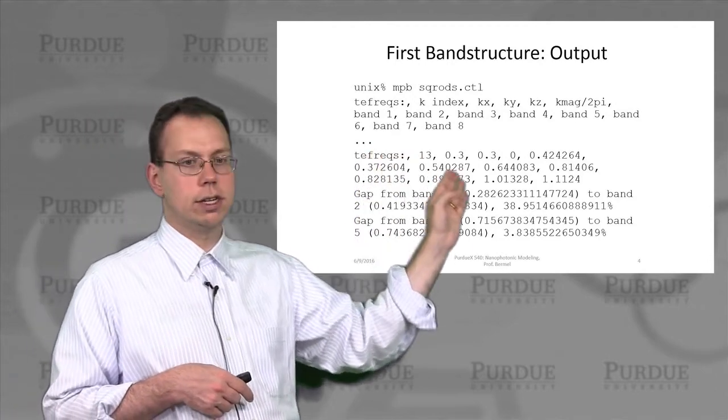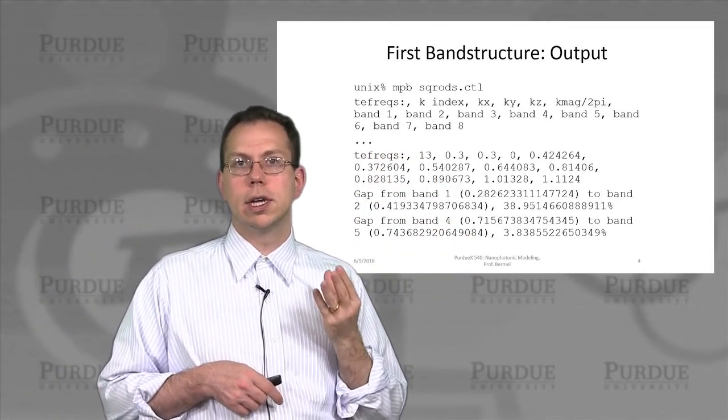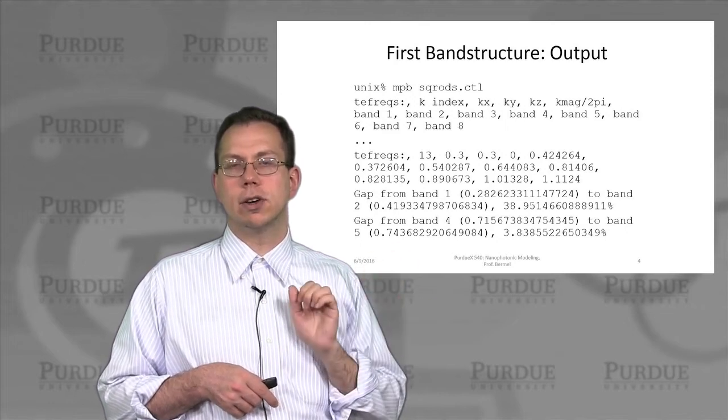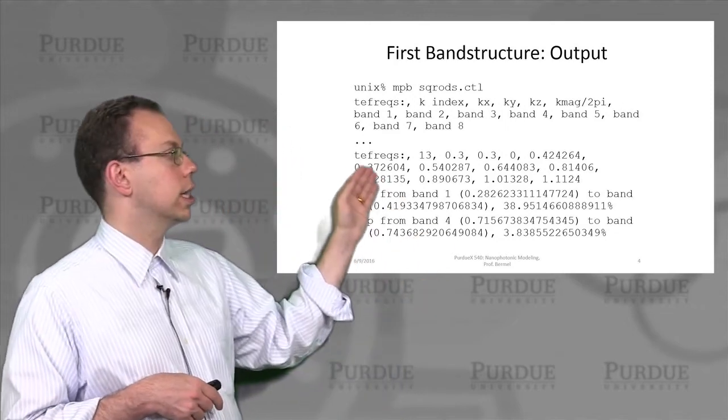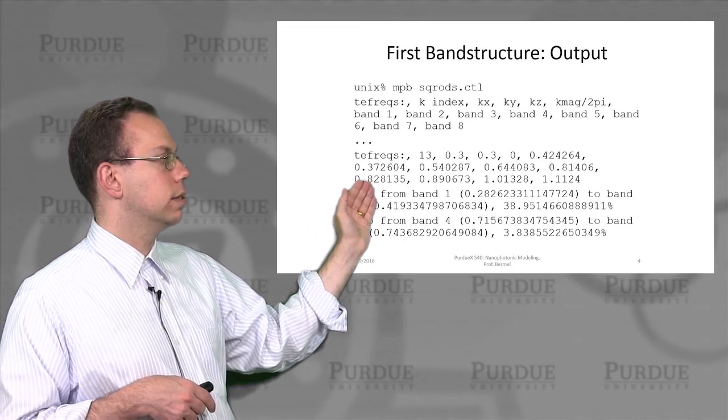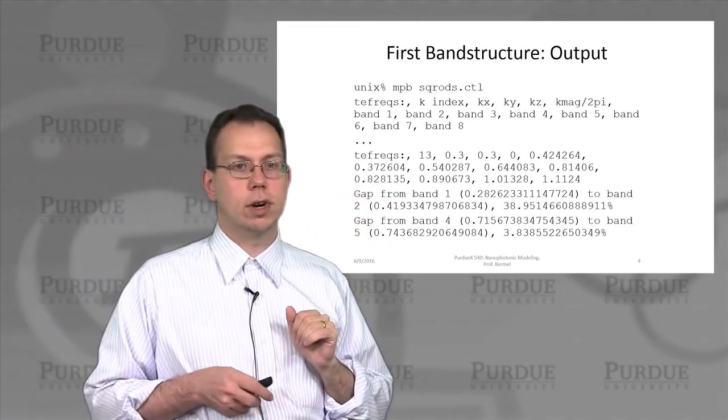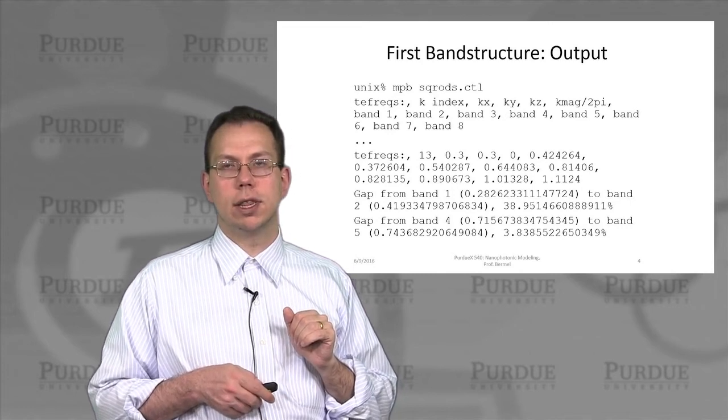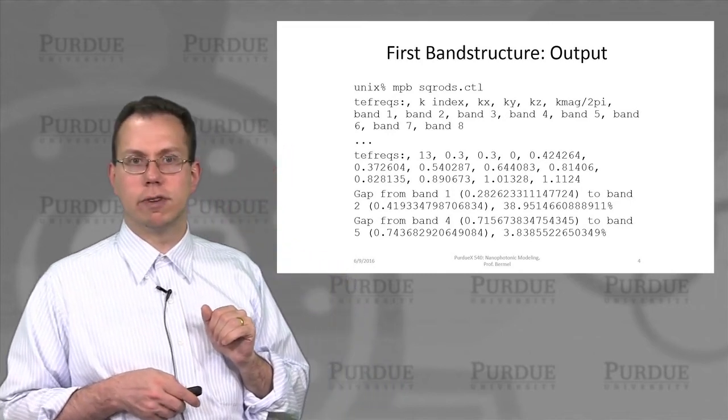And then once it's done, it also will go through all of those different bands that were calculated at each k and then calculate the gaps. You notice that there's a very large gap for the case of the TE modes in the square lattice of rods between bands one and two, and then much smaller gap between four and five.